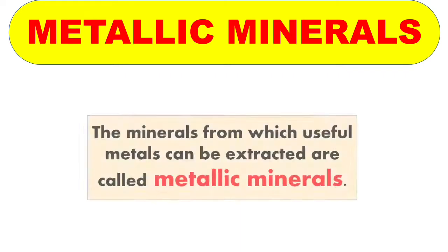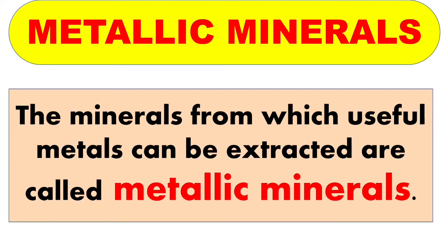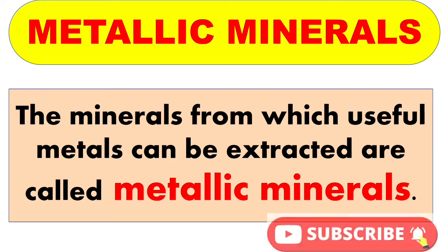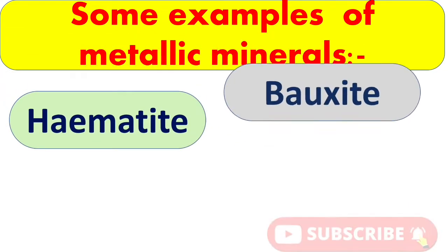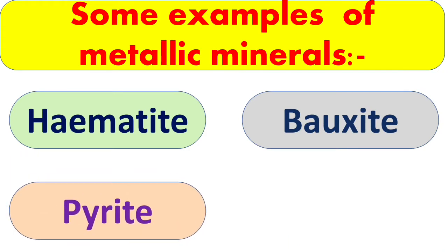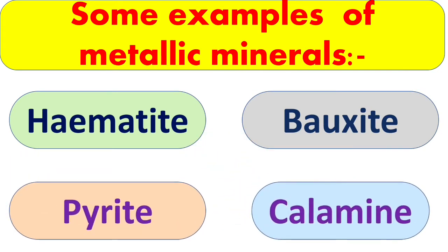First is metallic minerals. The minerals from which useful metals can be extracted are called metallic minerals. They are dug out from mines and processed to obtain the metals they contain. Some examples of metallic minerals are hematite, bauxite, pyrite, and calamine.